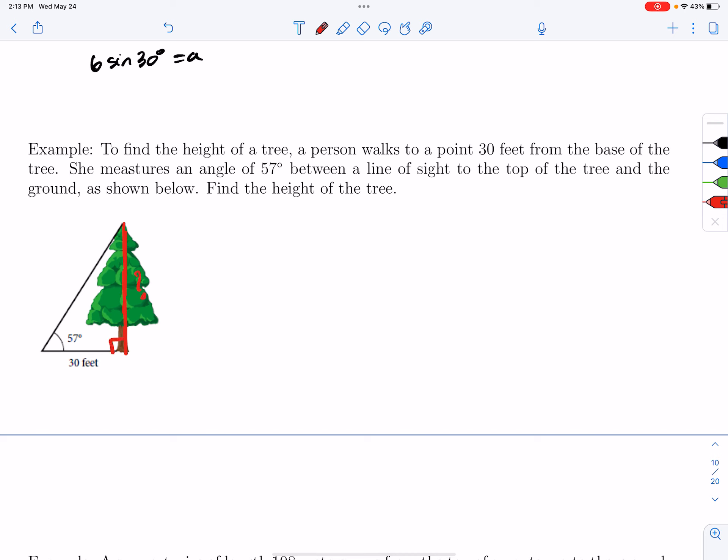Now, this makes a right triangle. I guess we are assuming that that tree is perfectly upright. But if that's the case, we can use a trig ratio here. So I have this angle, 57 degrees. I have the opposite, or I want to know the opposite side. And I have the adjacent. So the trig function that relates the opposite and the adjacent is tangent.